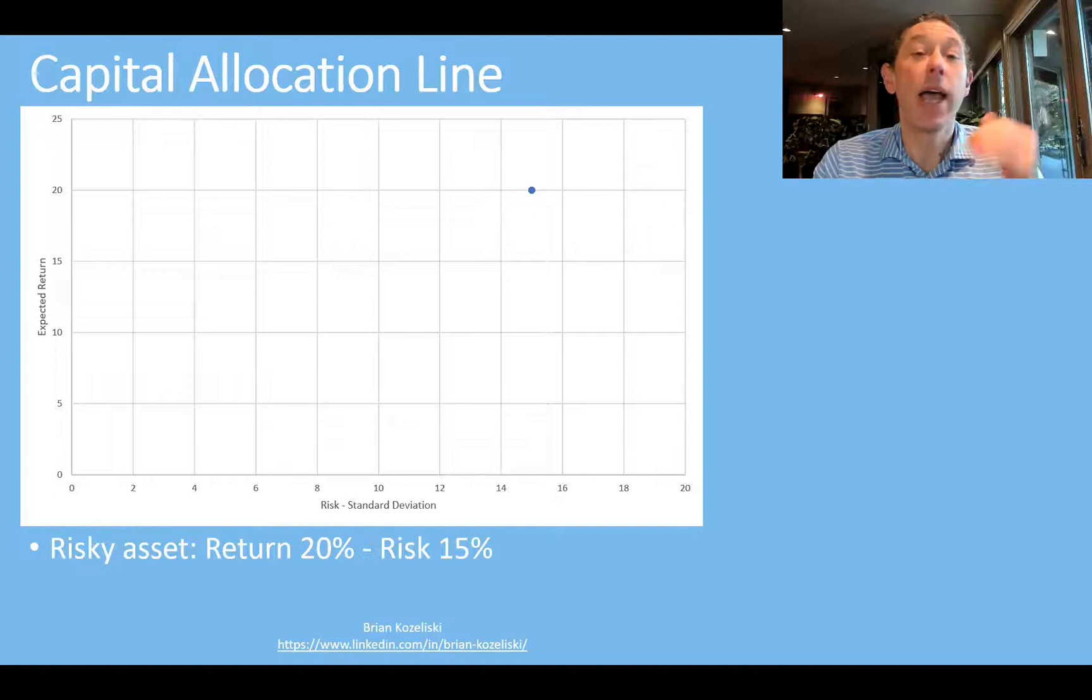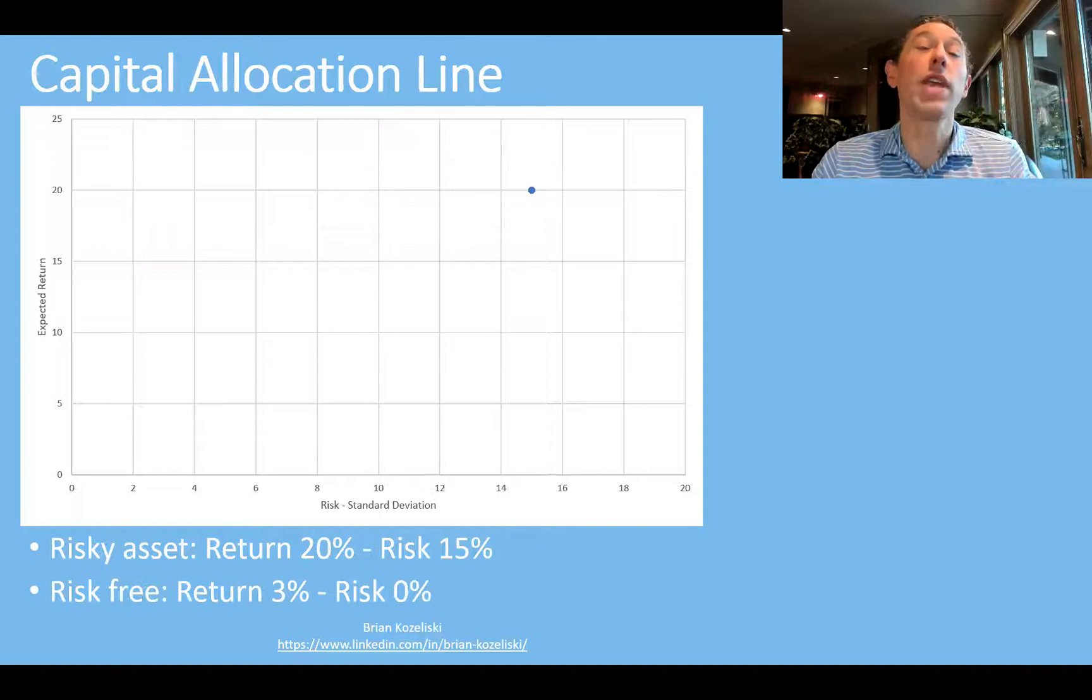Let's consider, for example, that we have a risky asset out there that has a return or an expected return of 20% and a risk or a standard deviation, not beta, of 15%. So that would be represented on this chart here. Here we can see that it is right there at 20% expected return and 15% risk. That's our return profile. Now, if we introduce a risk-free asset, this will change things. Let's suppose we have a risk-free asset that has a return of 3% and a risk of zero because it is risk-free. Now we can combine these two assets to create different return and risk profiles.